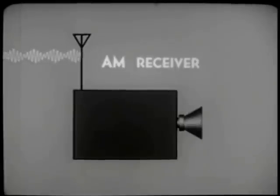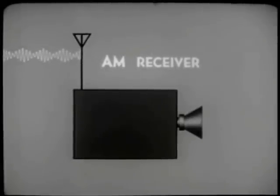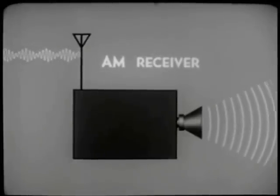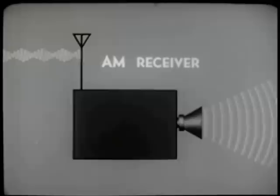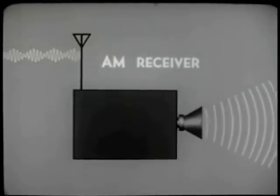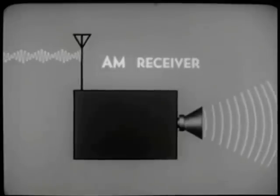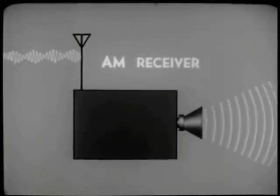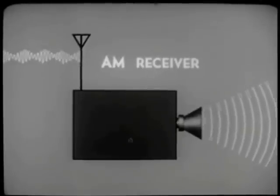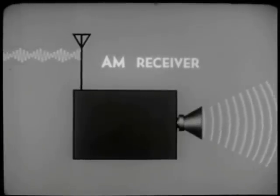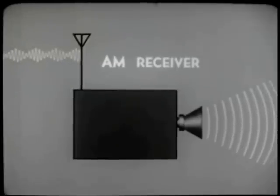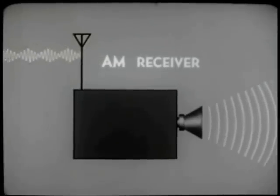Now, a partial review of what happens in the AM receiver. The amplitude-modulated RF carrier is picked up by the receiver's antenna. The receiver extracts the intelligence carried by the RF, transforms it back to an audio signal, amplifies it, and feeds it to the speaker. It emerges from the speaker as sound waves, which can be heard and understood by the human ear.